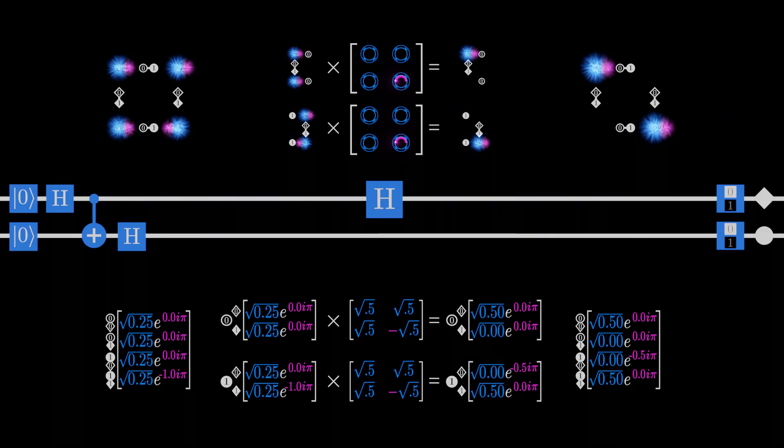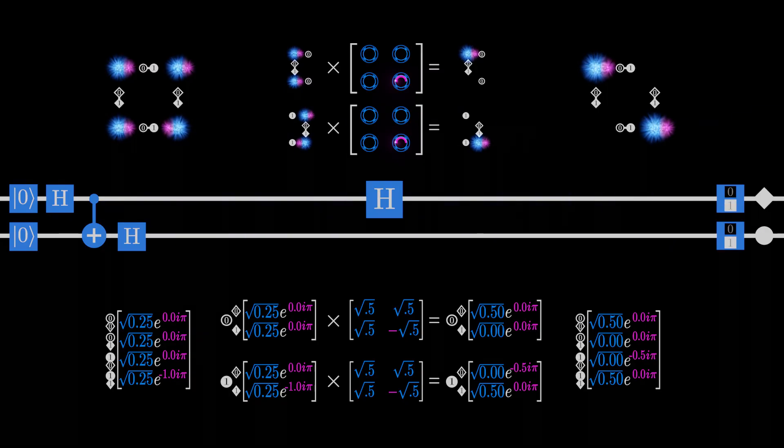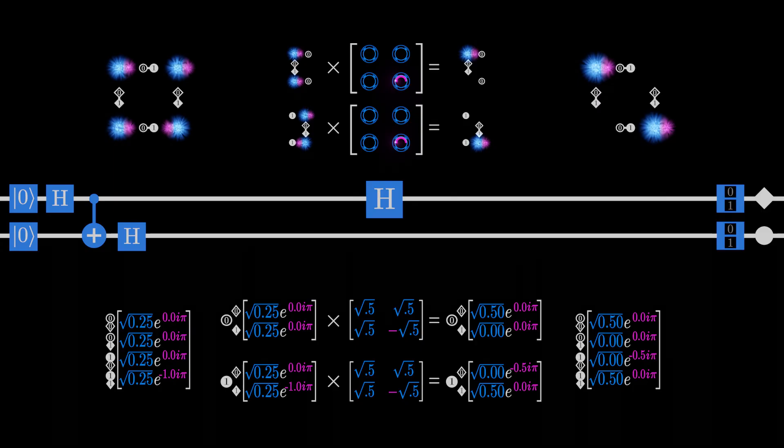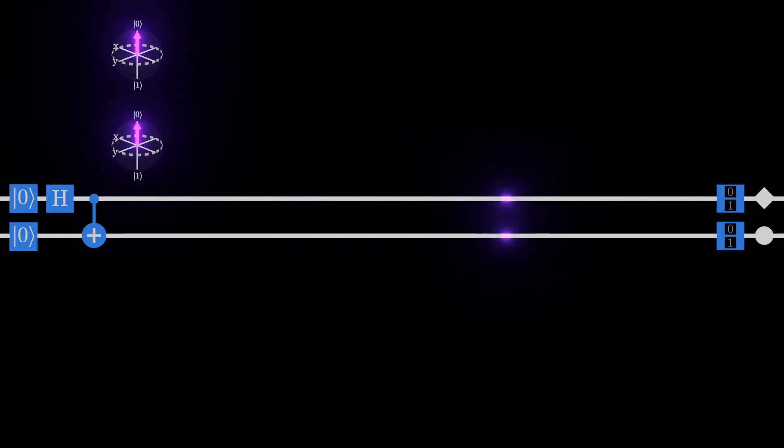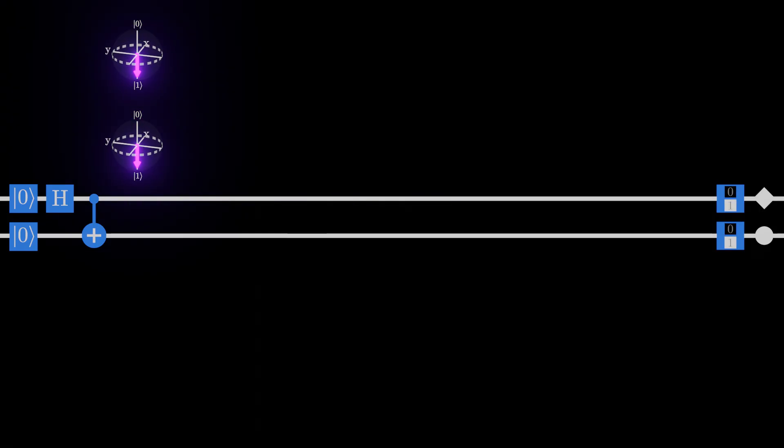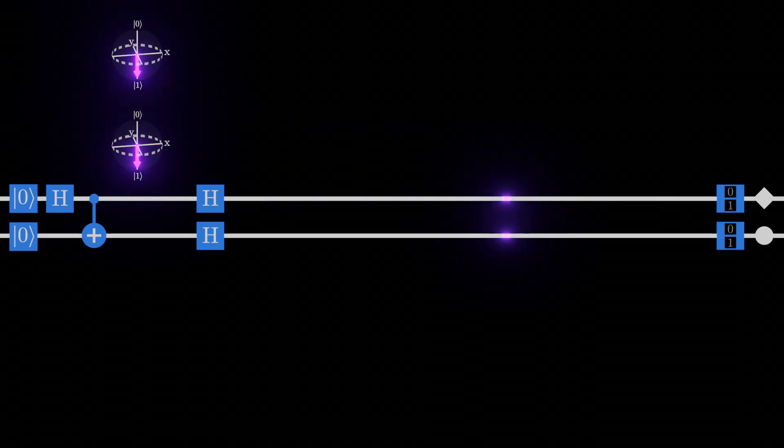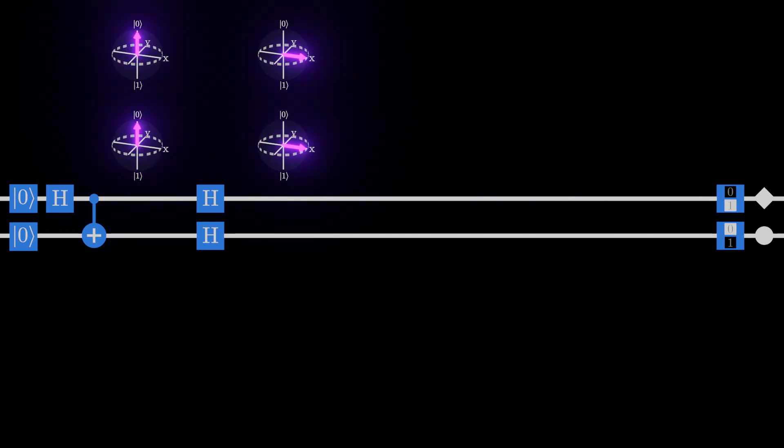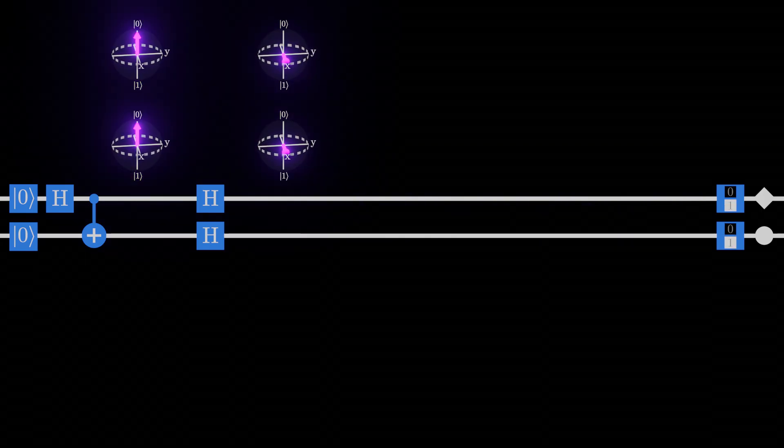With the explanation we've built so far, we'd expect this circuit to always produce measurements that agree with each other. A simpler explanation for the behavior we saw earlier is that the controlled knot might just be randomly setting both qubits to be measured as 0 or both measured as 1, without creating any kind of entangled superposition. If that were the case, the two Hadamard gates would take these qubits with definite states and rotate them into 50-50 superpositions, like we saw last time. In short, if entanglement isn't real, we'd expect our measurements after this circuit to be completely random.